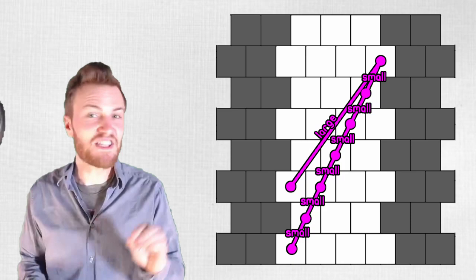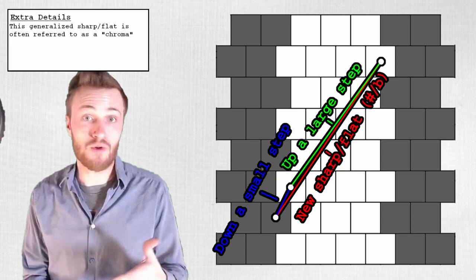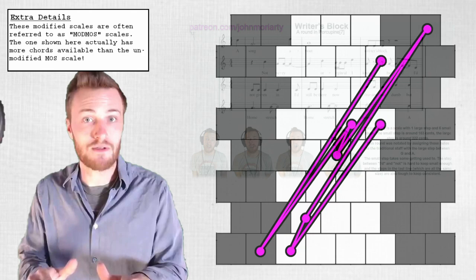This one large, six small scale can also be modified by a generalized sharp and flat, which is derived as the interval between the large and small steps in the scale. These modifications can be used to gain access to different combinations of major and minor chords than were available before, and to create melodic interest, especially with small steps surrounding target notes.